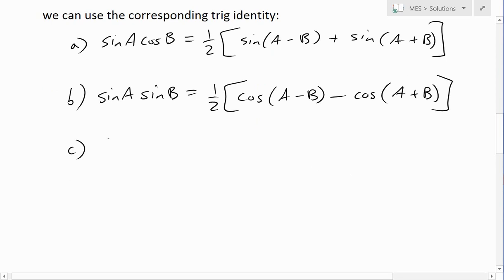And now the third one which corresponds to C, there's two coses, cos A and cos B equals to one half of cos A minus B, and now we have a plus cos A plus B. So these identities are all very similar to each other.